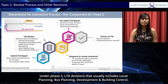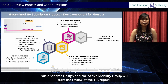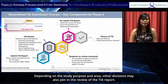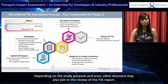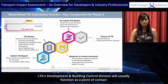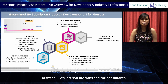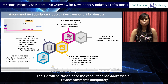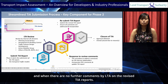Under Phase 2, LTA divisions — which usually include local planning, bus planning, development and building control, traffic scheme design, and the active mobility group — will start the review of the TIA report. Depending on the study purpose and area, other divisions may also join. LTA's development and building control division will usually function as the point of contact between LTA's internal divisions and the consultants. The TIA will be closed once the consultant has addressed all review comments adequately and there are no further comments by LTA on the revised TIA reports.